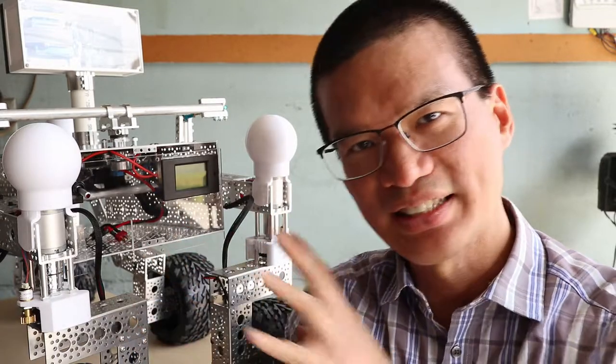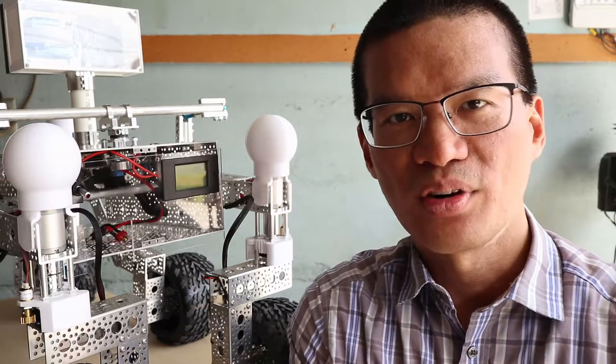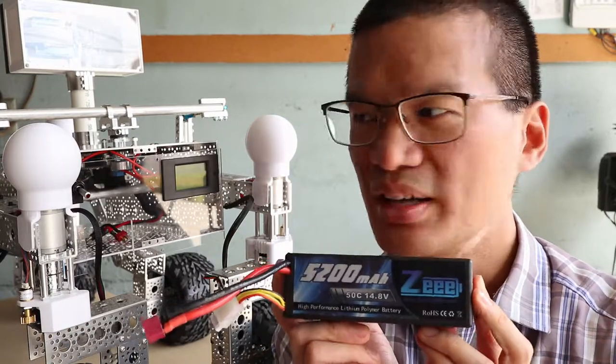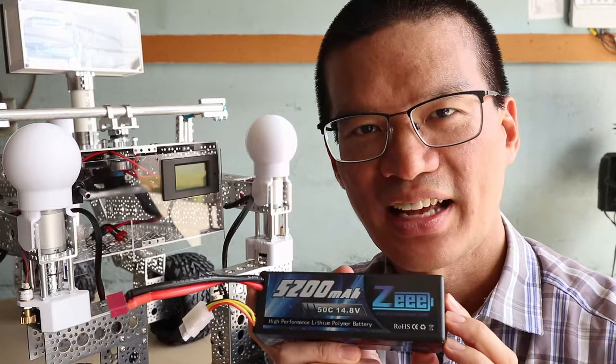And while I was at it, I also wanted to solve another problem that I had with the rover, which is that every time I want to recharge the battery, I have to disassemble a panel to access the battery. So, one, a tray for 4-cell lithium polymer battery, and two, make it externally accessible.